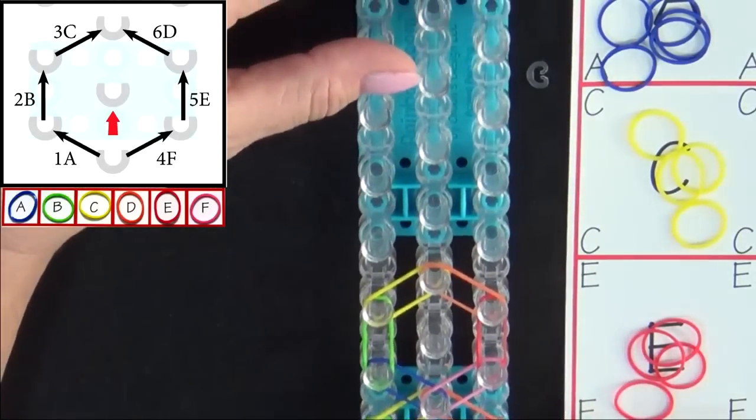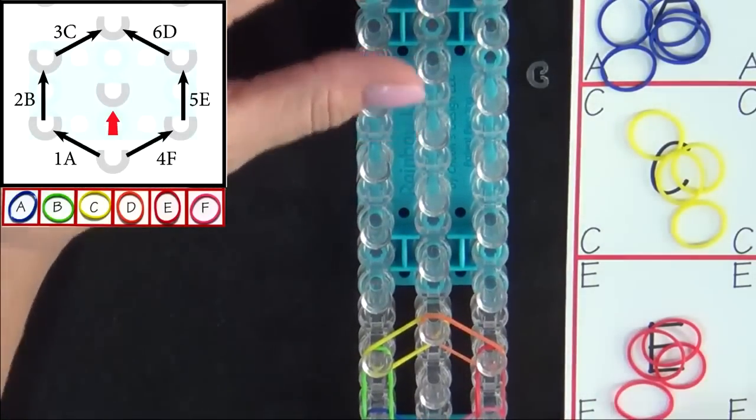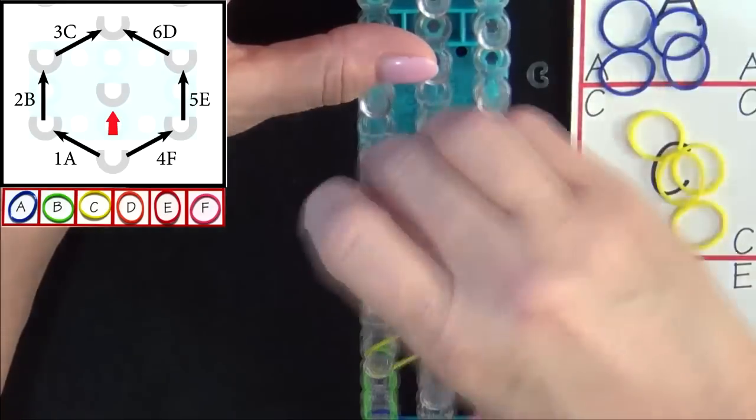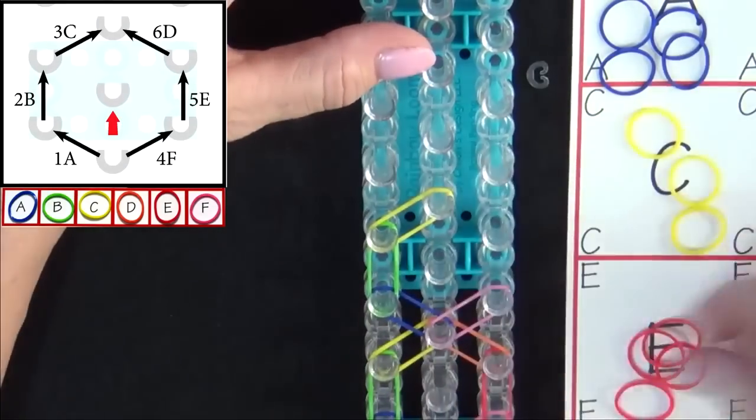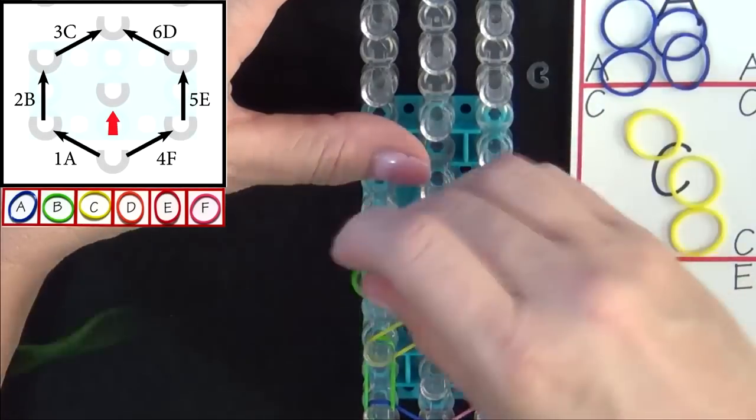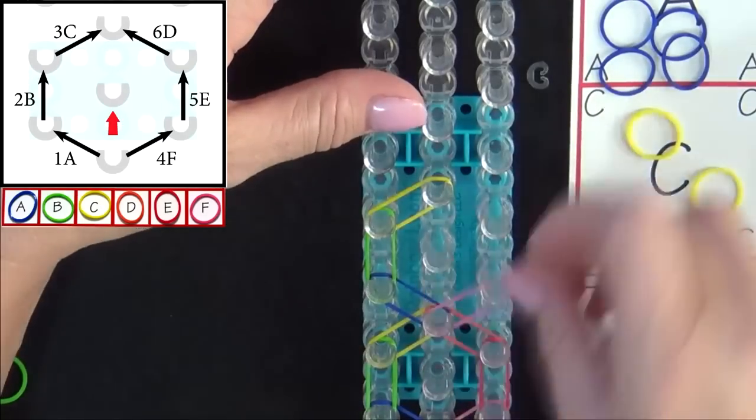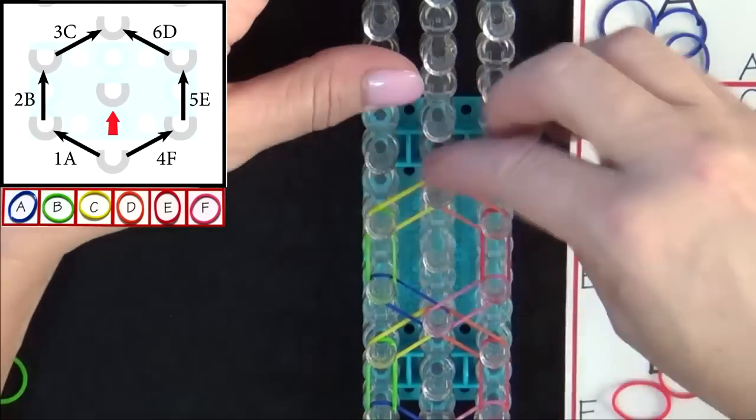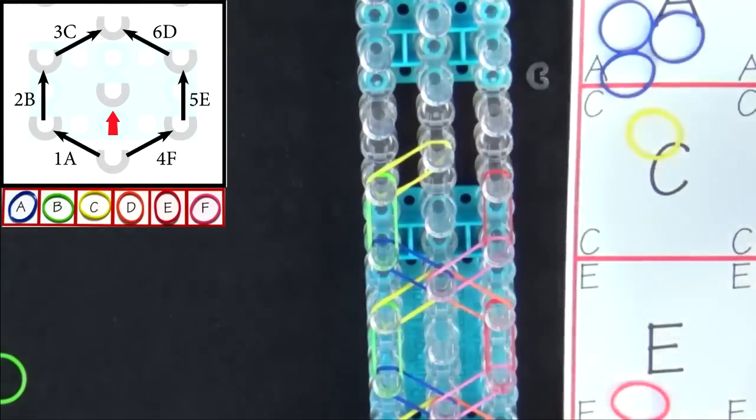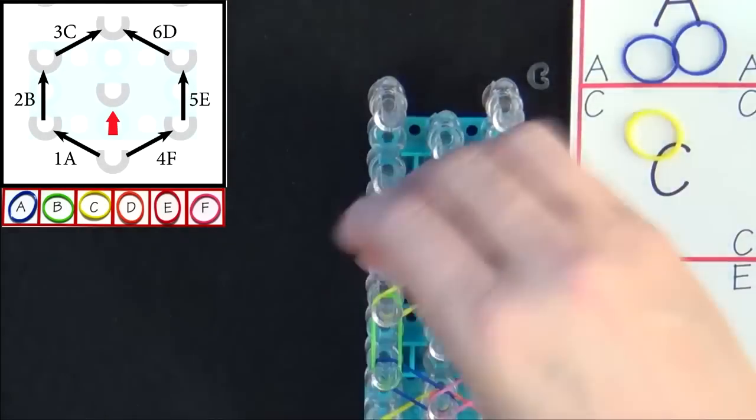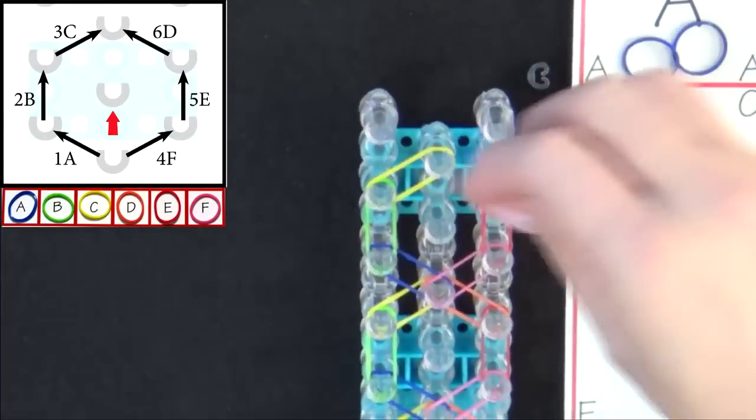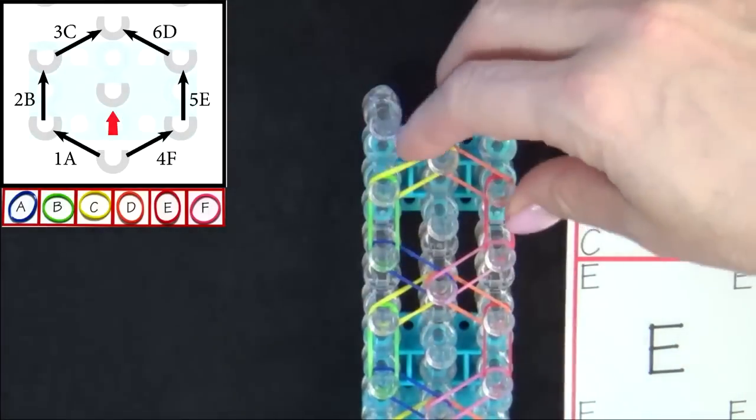Pause the video here and refer to the diagram on your screen until you reach the end of the loom. We'll fast forward from here. And you place your last band into the center pin.